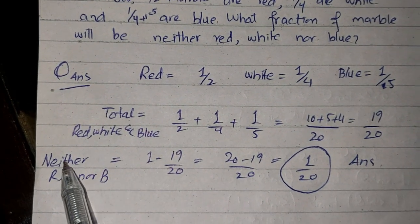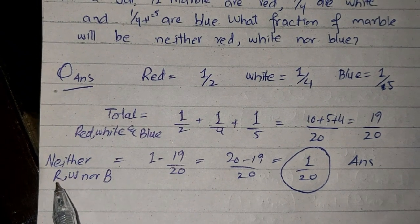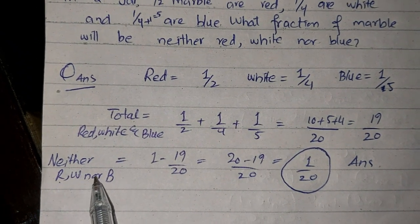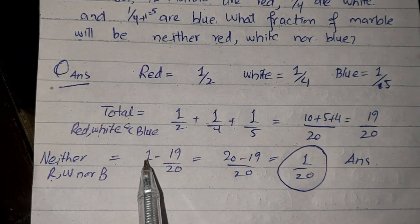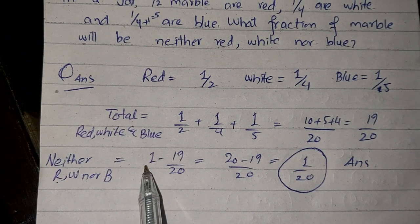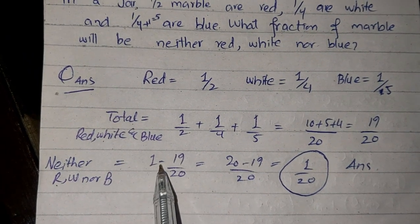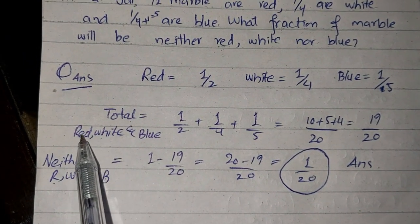Neither red, white nor blue: total one minus 19 by 20 equals one by 20.